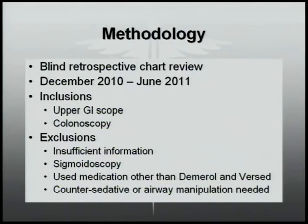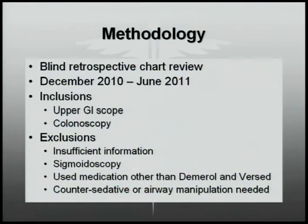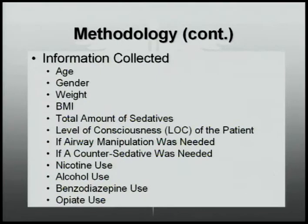The methodology of this experiment is classified as a blind retrospective chart review. Patients were chosen from a certain time period of December 2010 to June 2011. The procedures included upper GI scopes and colonoscopies. Patients excluded involved insufficient information, flexible sigmoidoscopies, any other medication except Demerol and Versed, or if a counter sedative or airway manipulation was needed. The flexible sigmoidoscopies were excluded because they did not require any sedative. The information collected came from the endoscopy reports, histories, and physicals of the patient.